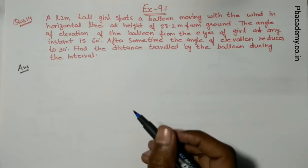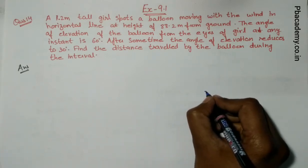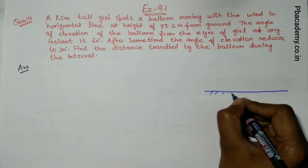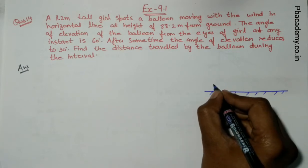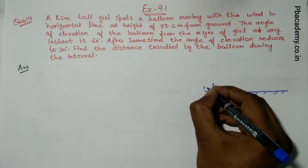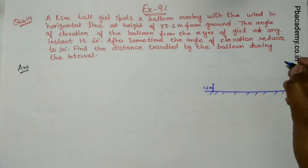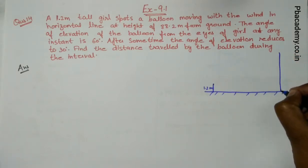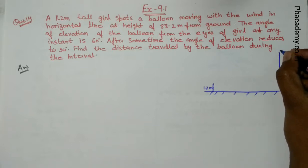Hello students, let us discuss this question. In this question we are given that there is a girl standing on the ground. The girl's height is 1.2 meters. There is an air balloon which is flying at the height of 88.2 meters.